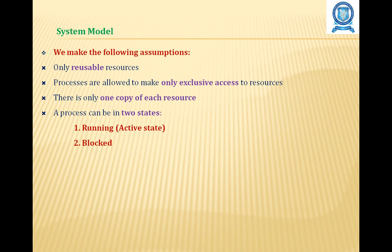The system model assumptions include: the system has only reusable resources; processors are allowed only exclusive access to resources; and there is only one copy of each resource. A process can be in one of two states: running or blocked. The running state, also called the active state, means the process has all needed resources and is either executing or ready for execution. In the blocked state, a process is waiting to acquire some resource.